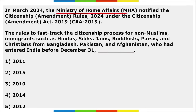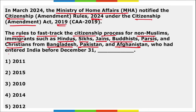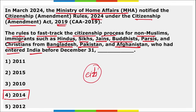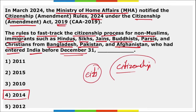Next: the Ministry of Home Affairs notified the Citizenship Amendment Rules 2024 under the Citizenship Amendment Act of 2019. The rules fast-track the citizenship process for non-Muslim immigrants — Hindus, Sikhs, Jains, Buddhists, Parsis, and Christians — from Bangladesh, Pakistan, and Afghanistan who had entered India before 31st of December 2014. They will be granted Indian citizenship and employment opportunities.